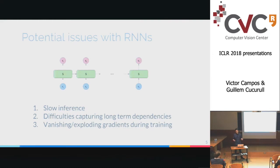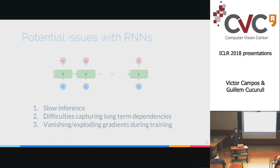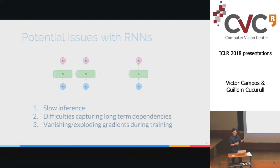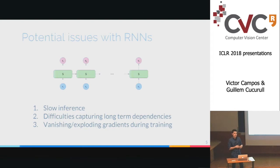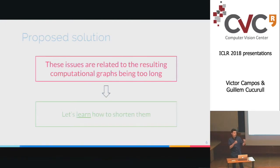These issues include slow inference, because we cannot parallelize across time steps in RNNs — until you're done with one time step, you cannot process the next one, no matter what hardware you have. There is also difficulty in capturing long-term dependencies, even with gated units like LSTM or GRU. These gates are soft — they are only 0 or 1 asymptotically — so when you apply a gate many times, you get a memory leak. During training, you also have vanishing or exploding gradient issues when applying the chain rule many times. These issues all relate to the length of the graph.